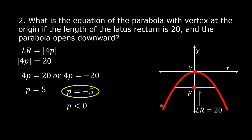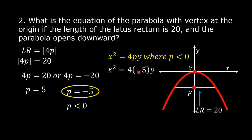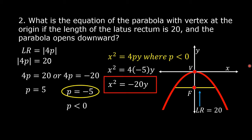Since the parabola opens downward, we choose p equal to negative 5 where p is less than 0. The equation of the parabola is in the form x squared equal to 4py where p is less than 0. Replacing p by negative 5, we have x squared equal to 4 times negative 5 times y, which simplifies to x squared equal to negative 20y. This is the equation of the parabola with the vertex at the origin if the latus rectum is 20 and the parabola opens downward.